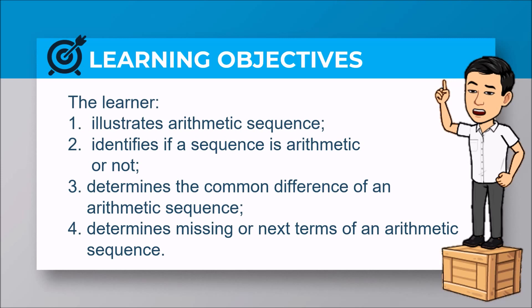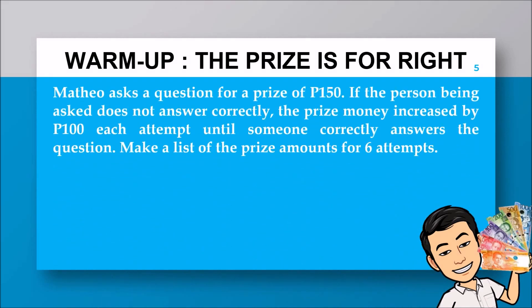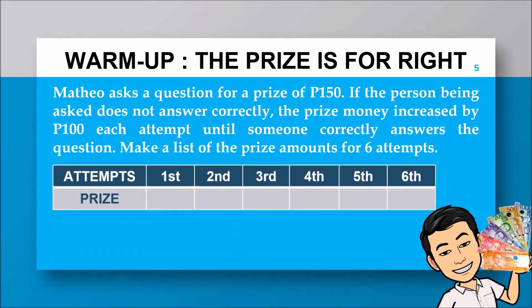There are also missing or next terms of an arithmetic sequence. For our warm-up activity, the price is for the right answer. The question has a starting price of 150 pesos. If the person being asked does not answer correctly, the price money increases by 100 pesos each attempt until someone correctly answers. Make a list of the price amounts for six attempts by completing the table below.